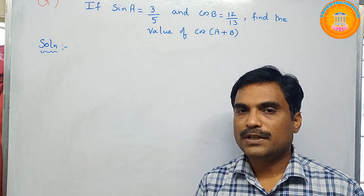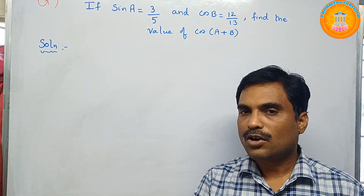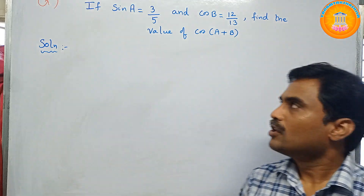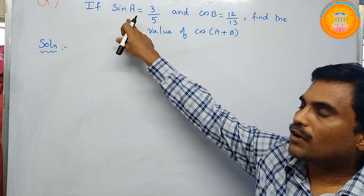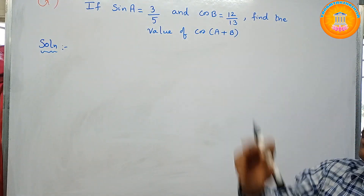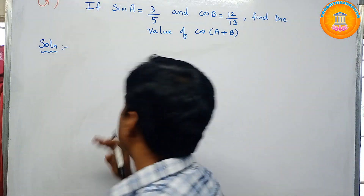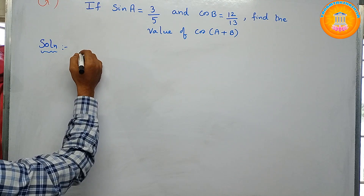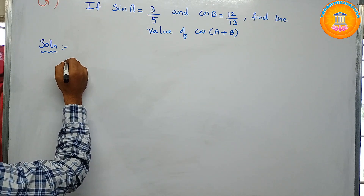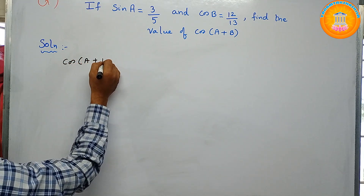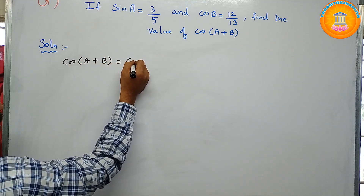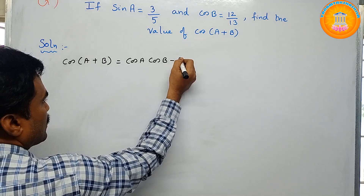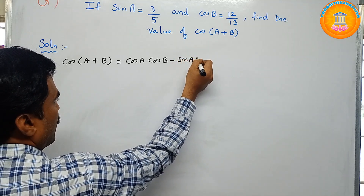You need to use the trigonometry formula for cos of a plus b. What is cos of a plus b? Cos of a plus b is cos a cos b minus sin a sin b. You need to find the value of cos a and also the value of sin b. So first we write that trigonometry formula: cos of a plus b equals cos a cos b minus sin a sin b.